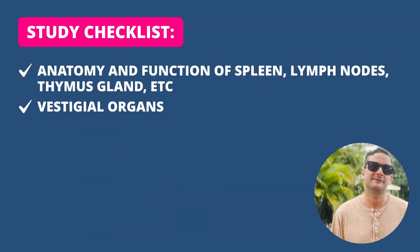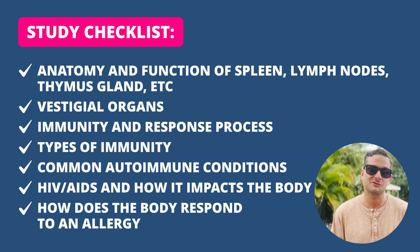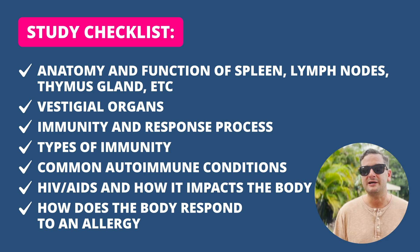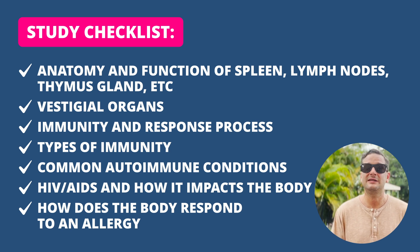For the lymphatic system, key players to know include the spleen, tonsils, adenoids, appendix, and thymus gland. You'll need to know the two types of lymphocytes — B cells and T cells — and regarding T cells, you need to know about killer T cells killing host cells. You could be asked why a B cell stimulated by a microbe to divide repeatedly and form a large population of identical B cells is a positive addition to the body's defense strategy.